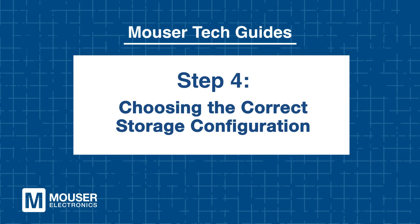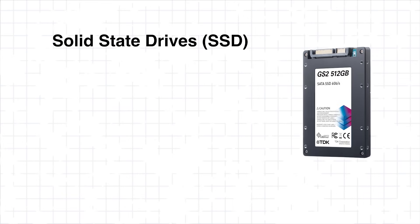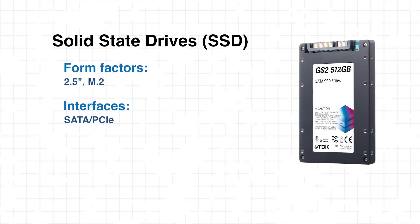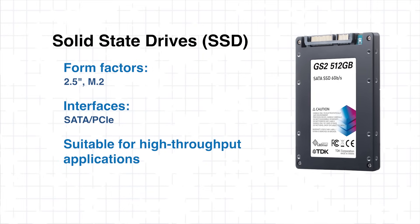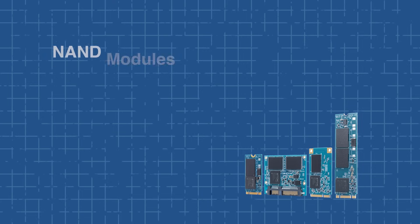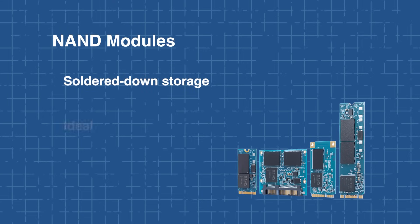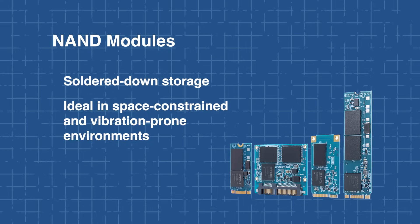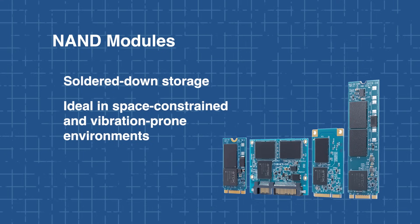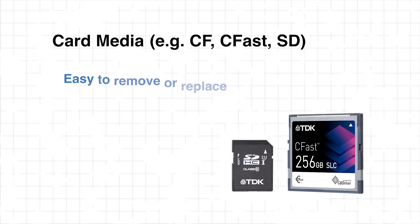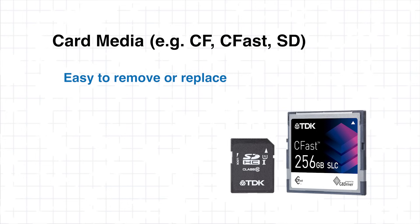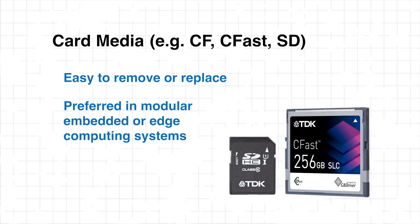Step 4: Choosing the correct storage configuration. TDK gives engineers a lot of GB driver-powered storage options, making it easy to pick the one that fits your system's needs. Whether the application calls for high-speed access, rugged design, or modularity, there's a format to match. Solid-state drives come in various form factors and interfaces, ideal for high-throughput applications requiring fast data access and larger capacities. NAND flash modules provide soldered-down storage, making them a solid choice for compact, vibration-prone environments where board space and mechanical stability are key. For systems that require removable storage, card media like CF and SD cards offer an easy-to-replace option, especially useful in modular embedded or edge computing platforms.